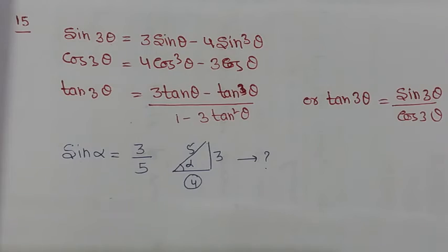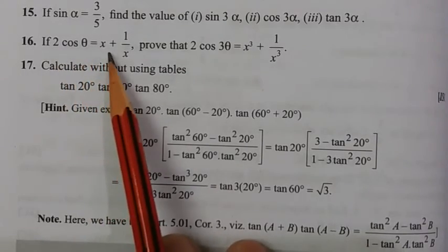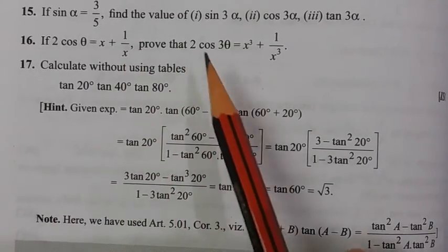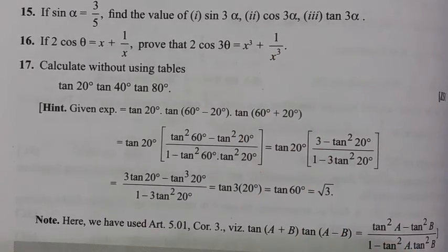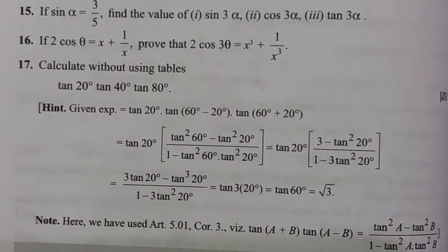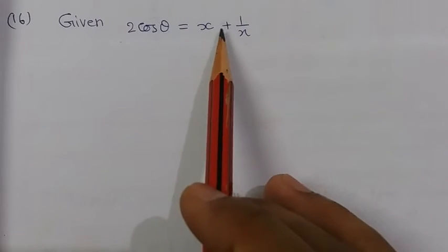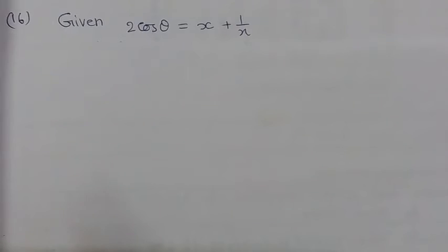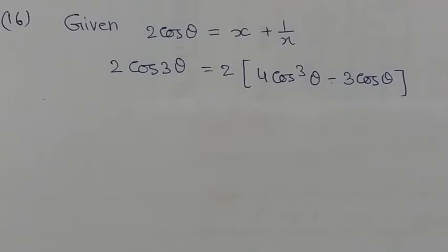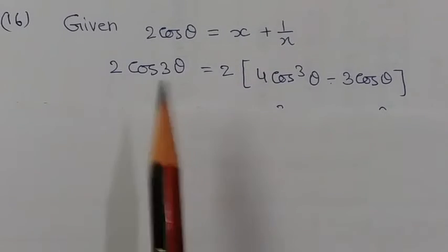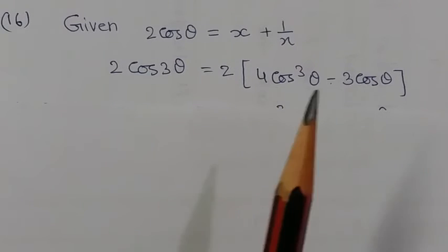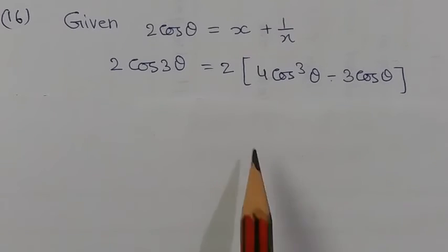Question number 16: If 2 cos θ equals x plus 1 upon x, prove that 2 cos 3θ equals x³ plus 1 upon x³. Write the left-hand side: 2 cos 3θ equals 2 times the formula for cos 3θ, which is 4 cos³θ − 3 cos θ. Taking cos θ common and multiplying 2 through both terms gives us terms involving (2 cos θ)³ and 3·(2 cos θ).